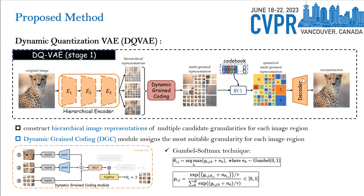Our first stage is named Dynamic Quantization VAE, or DQVAE for short, which first constructs hierarchical image representations. Then, we propose a dynamic granularity coding module to assign the most suitable granularity for each image region based on their different information densities. In this module, we implement a discrete gating network with a global softmax technique to make the discrete decision for each region.